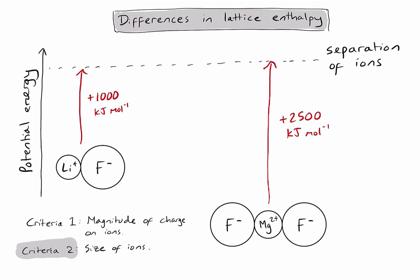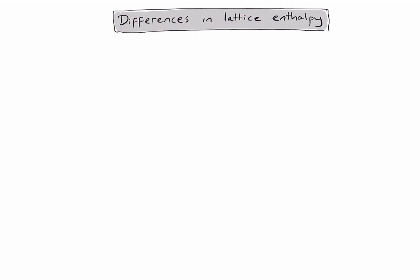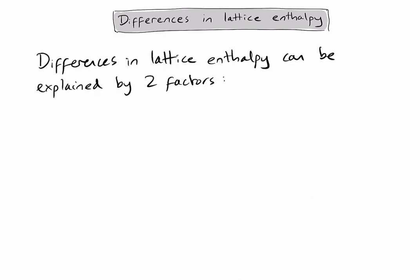In summary, if the ions—and it could be positive or negative ions—have a greater magnitude of charge, we would expect much greater lattice enthalpy values. And that's because with greater magnitudes of charge we see greater electrostatic forces of attraction in my ionic lattice, therefore we require more energy to pull them apart. Hopefully this video was of some help. As a quick summary before you go, the differences in lattice enthalpy can be explained by two factors: the first is the magnitude of charge on the ions, and the second is the size of the ions.